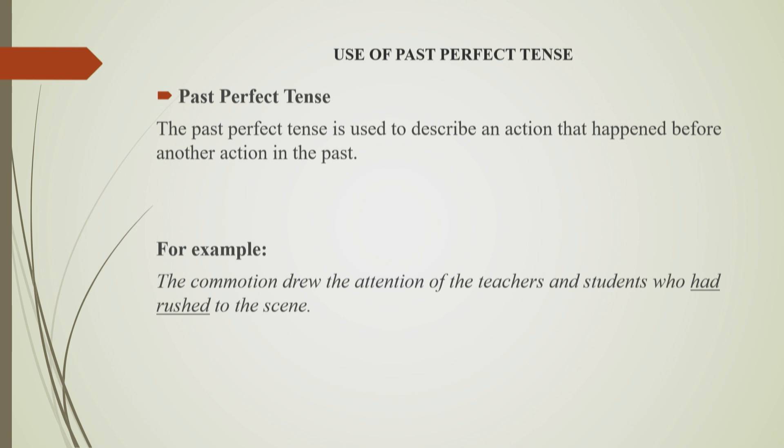Let's consider the use of the past perfect tense. The past perfect tense is used to describe an action that happened before another action in the past. For example: 'The commotion drew the attention of the teachers and students who had rushed to the scene.'